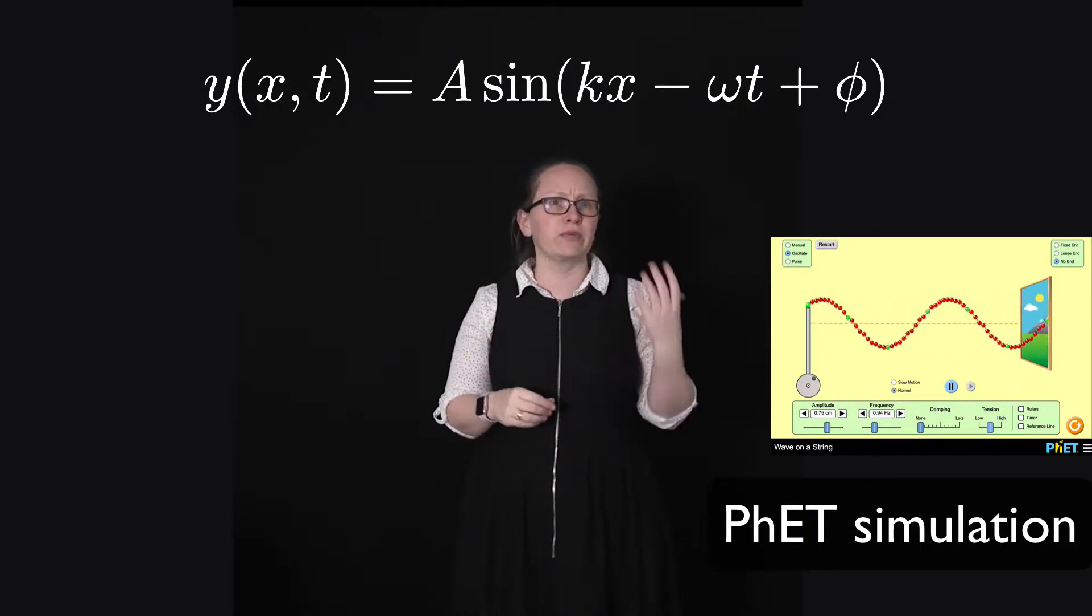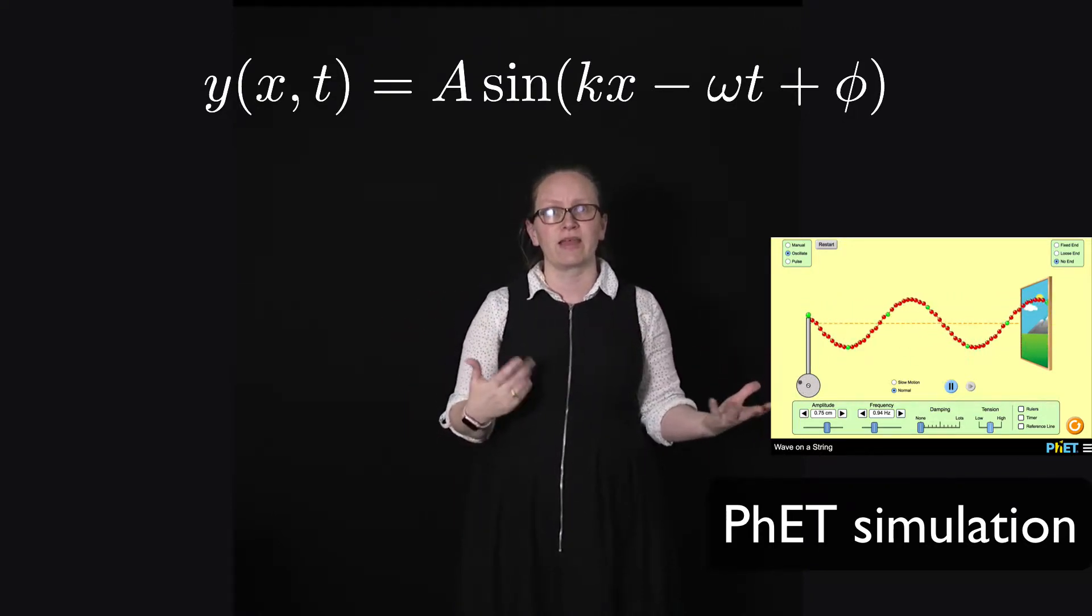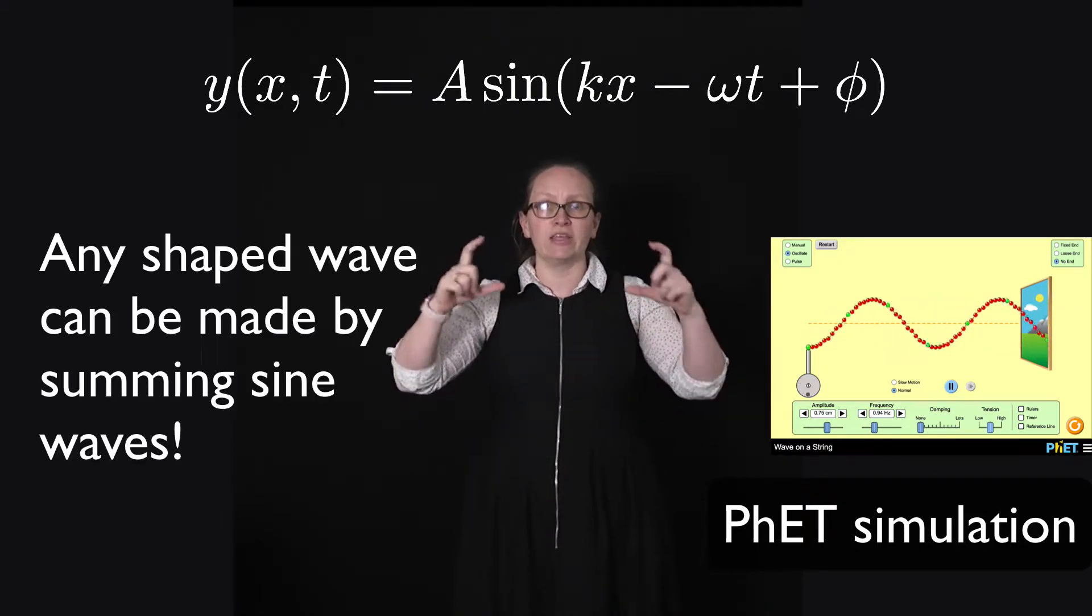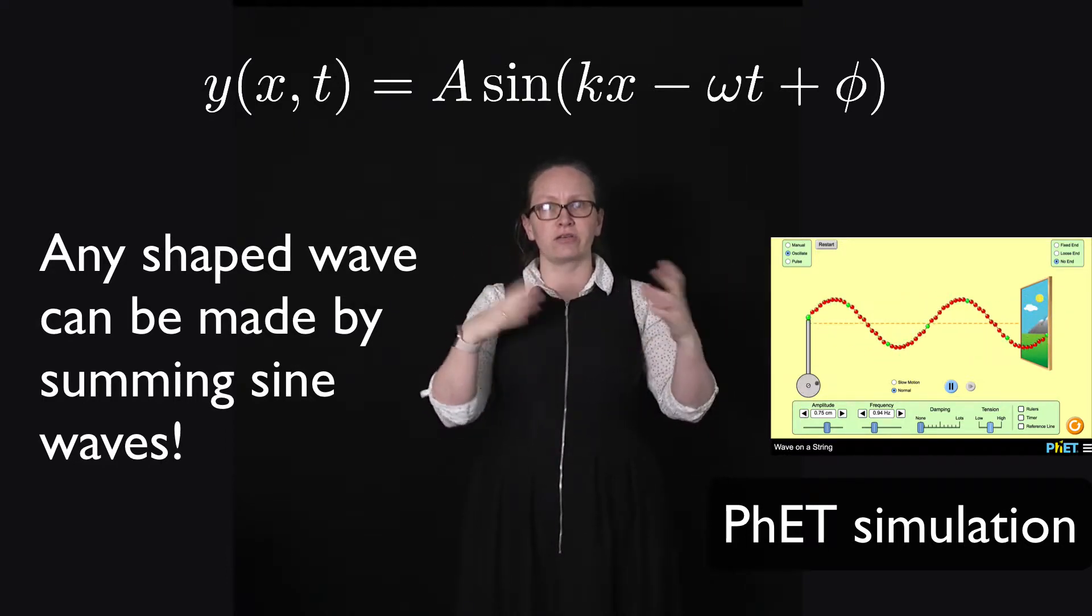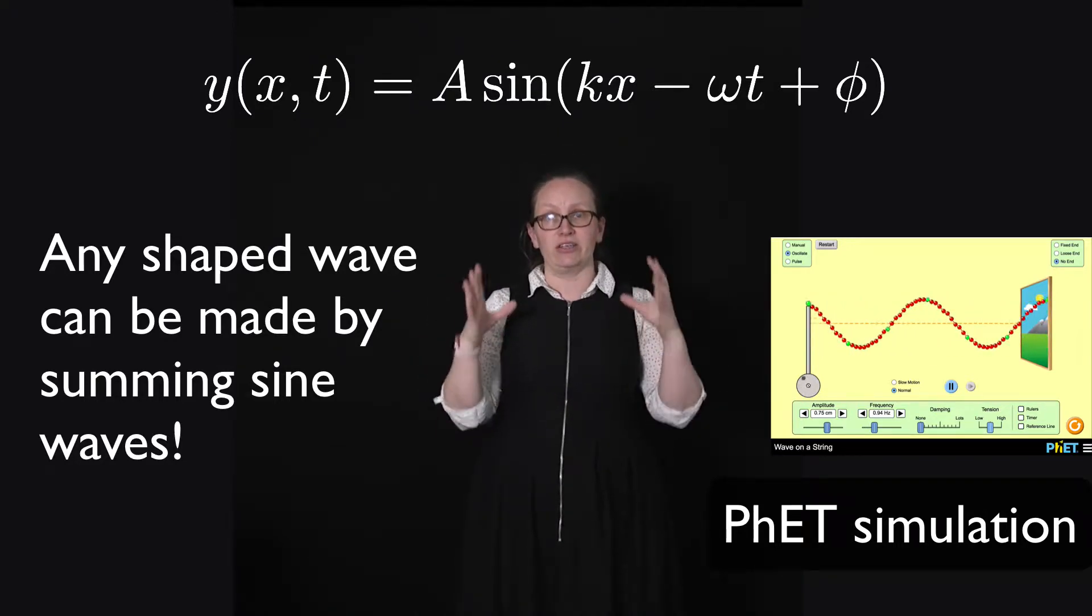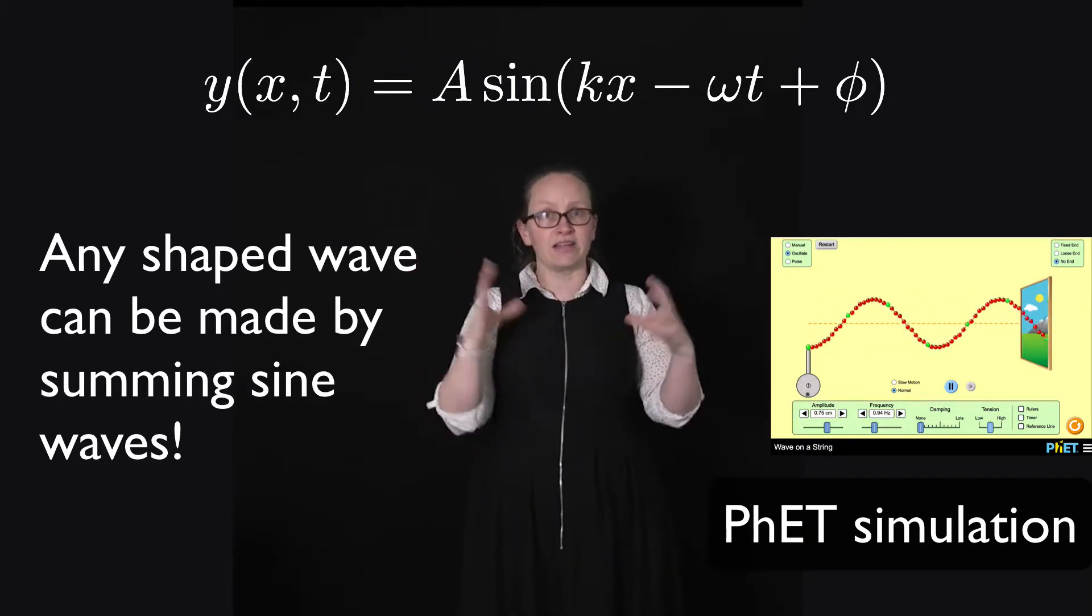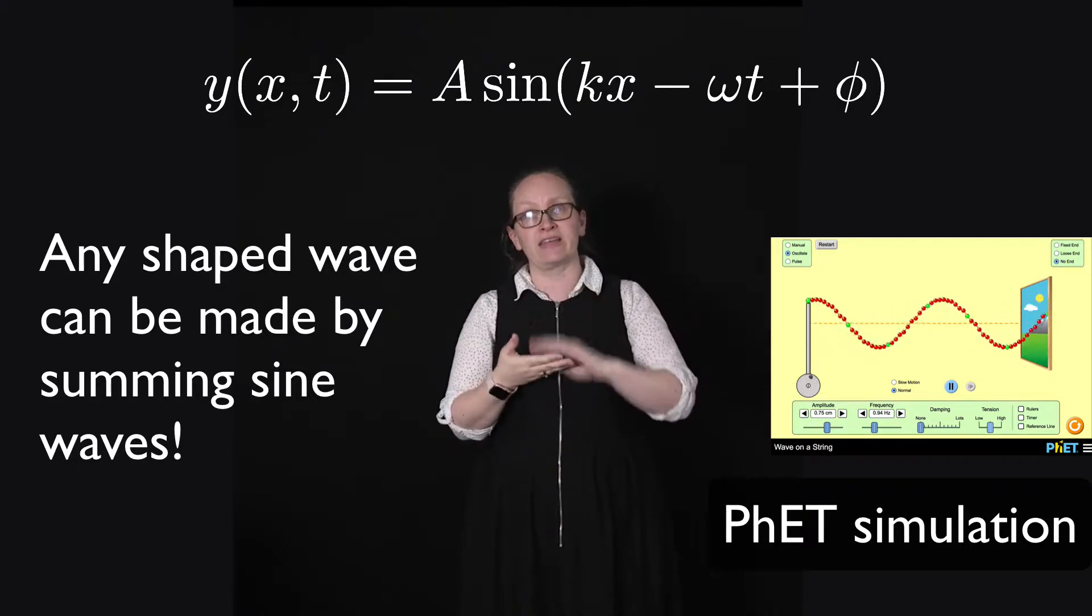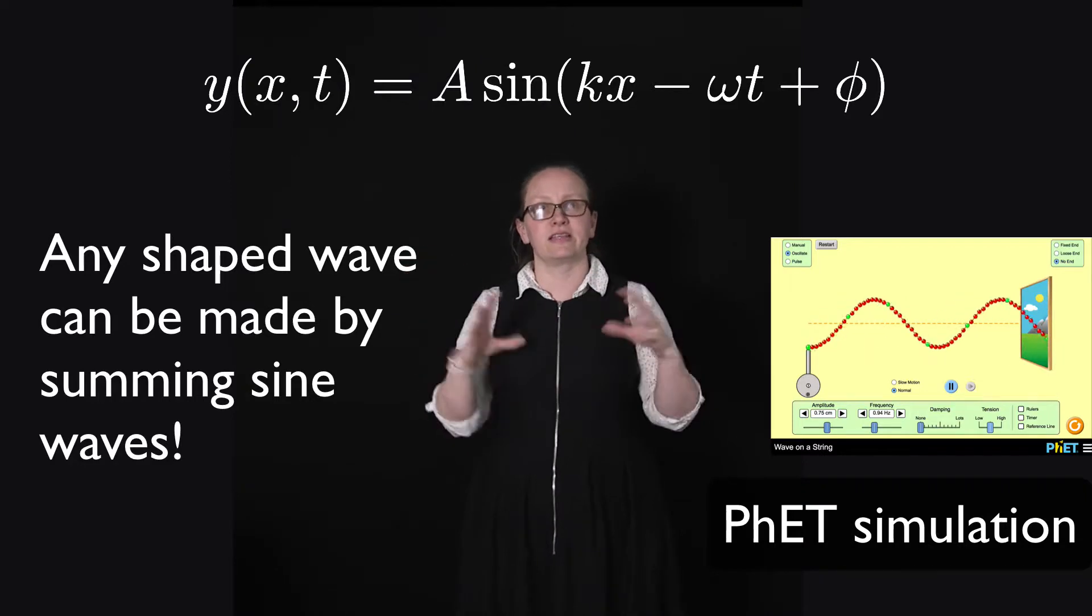So you may be thinking, well why do we choose a sinusoidal traveling wave? Why don't we choose some other type of function? And it actually turns out that there's a very good reason for this. We can generate any shape function by adding together different sine functions. So this is involved with Fourier transforms and things that you don't need to worry about. But basically you can think of sinusoidal traveling waves as the building blocks of any type of wave.